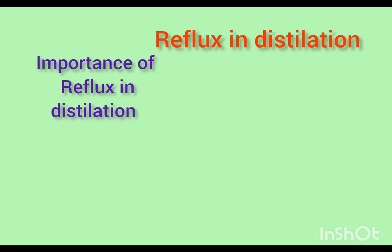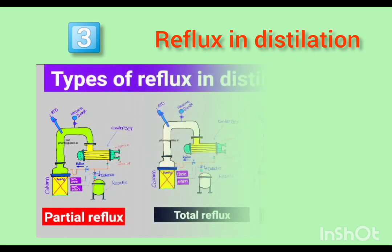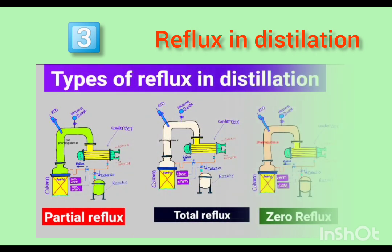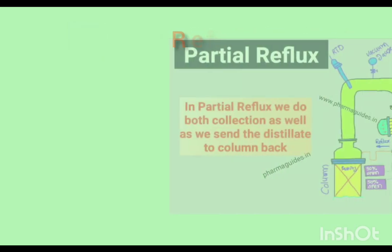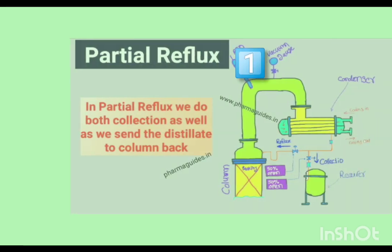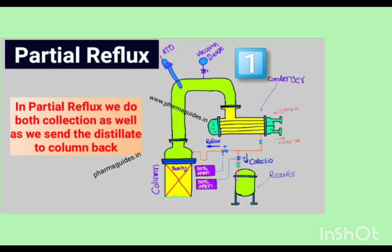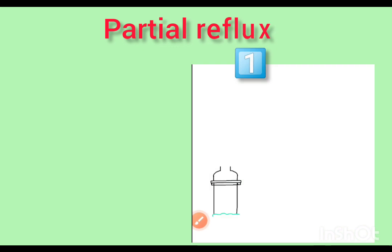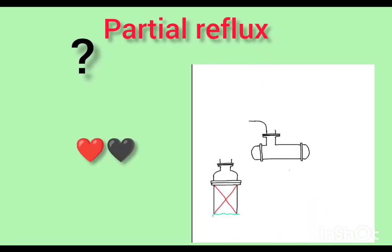There are three main types of reflux commonly used in distillation columns. The first is partial reflux. In this type, only a portion of the vapor produced in the column is condensed and returned to the column as liquid. For example, if we do 30% collection, then 70% of the condensate is sent back to the column.